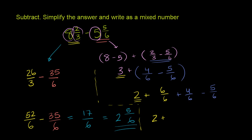and then over 6, we have 6 plus 4. Let me write it. 6 plus 4 minus 5. Now what's this going to equal? This is going to be this 2 and what over 6? And over 6, 6 plus 4 is 10 minus 5 is 5. So you have 2 and 5 sixths, which is exactly what we got the other way.